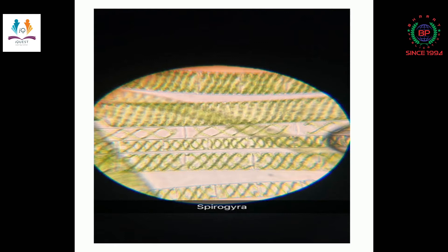Spirogyra is a green alga with a long filamentous structure. You can see rectangular cells which have less width than length. Spirogyra has a nucleus present within cytoplasmic strands — you can see the zigzag structure of these cytoplasmic strands with the nucleus inside. Spirogyra lives in fresh water and is silky to touch, which is why it is known as water silk. As a plant, it has a large vacuole present within the cell.